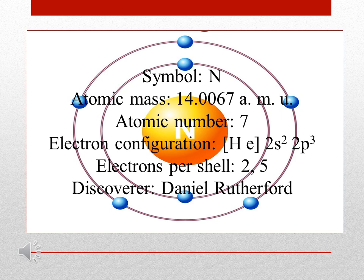Nitrogen. Symbol: N. Atomic Mass: 14.0067 AMU. Atomic Number: 7. Electron Configuration: [He] 2S2 2P3. Electrons Per Shell: 2, 5. Discovered by Daniel Rutherford.